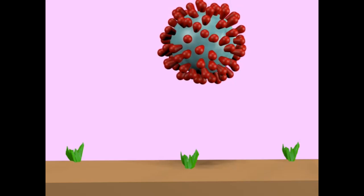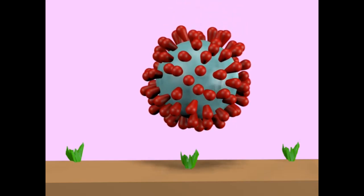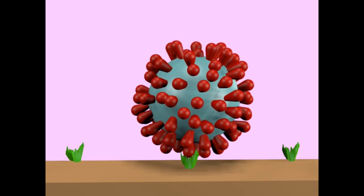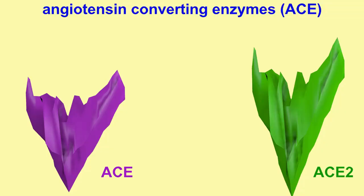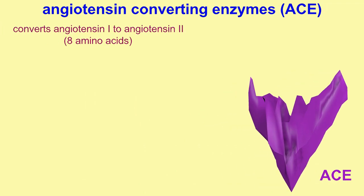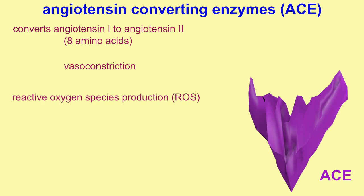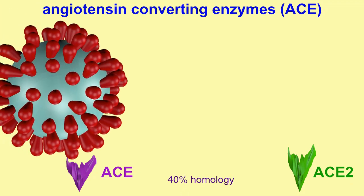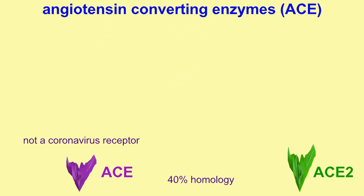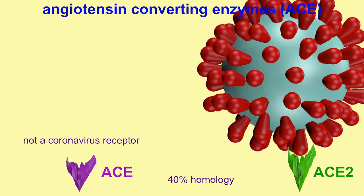The enzyme ACE2, the angiotensin-converting enzyme 2, is the receptor for coronavirus. Its major function in human physiology is in the renin-angiotensin system, and since this is dysregulated in coronavirus patients, it perhaps is worth some review. ACE2 was discovered in the year 2000 and is 40% homologous to ACE. They are similar but have different functions. Coronavirus can enter cells by interacting with ACE2, but not with ACE — ACE is not a receptor for coronavirus.